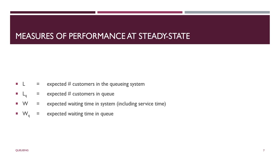What you see here are the output measures from the system — the dependent variables, the metrics, the measures of effectiveness (MOEs), or measures of performance. We use these measures to indicate the performance of a system. They are: L, the expected number of customers in the system; LQ, the expected number of customers in the queue; W, the expected waiting time in the system, including service time; and WQ, the expected time in queue.